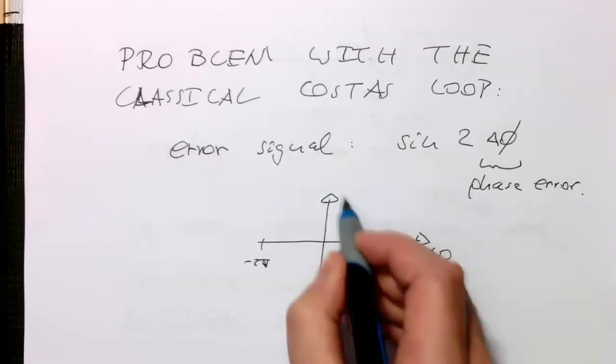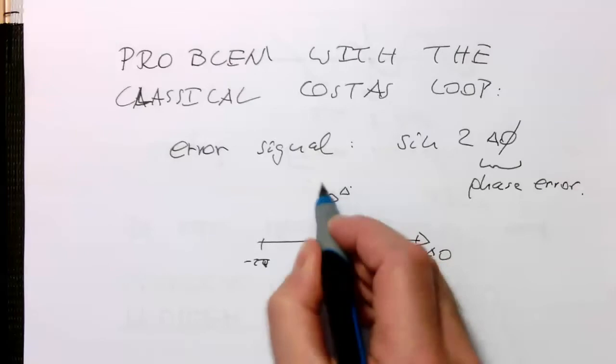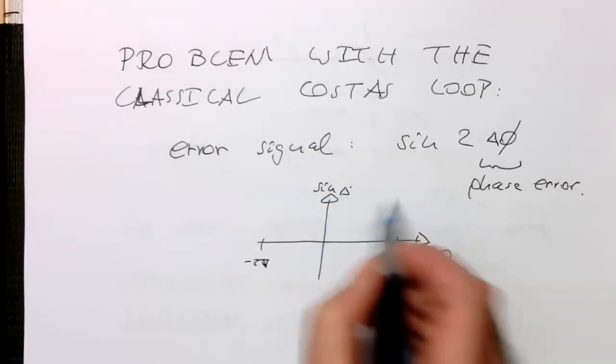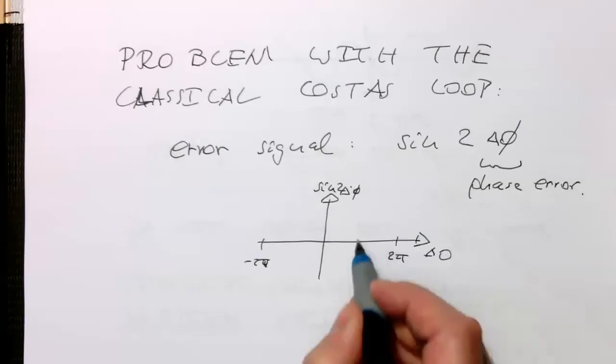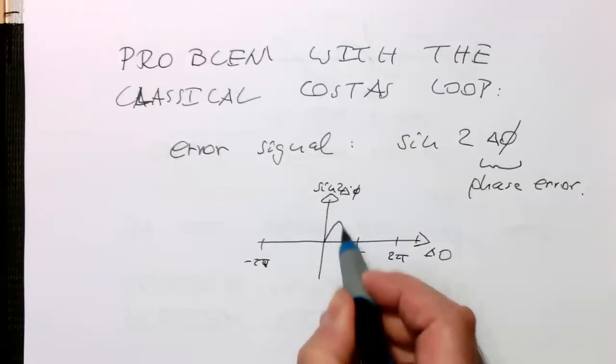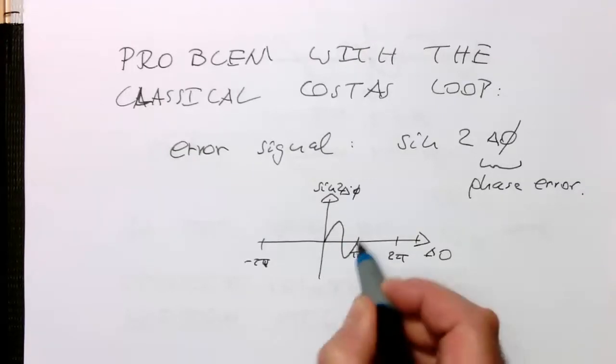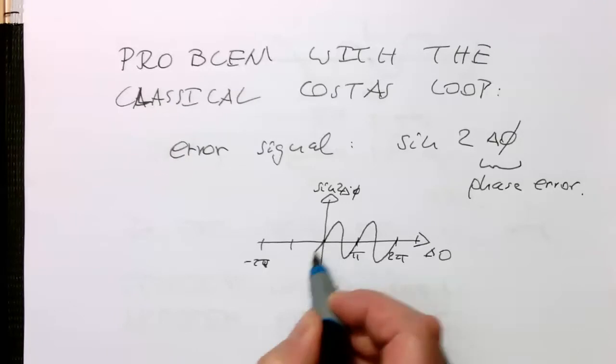So that's our sine of delta phi, but the 2 in there. And so if we got the pi here, so we have essentially two revolutions of this wave here.